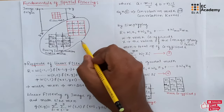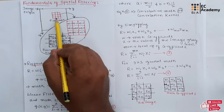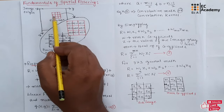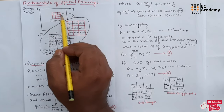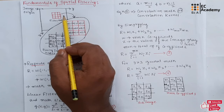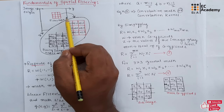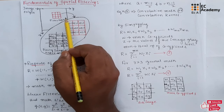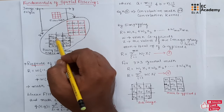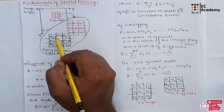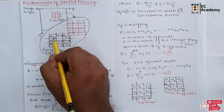The mechanics of the spatial filter is shown in this figure. The process consists of moving the filter mask from point to point in an image. At each point, the response of the filter is calculated using a predefined relationship. For a linear spatial filter, the response is given by the sum of the products of the filter coefficients and the corresponding image pixel coefficients.